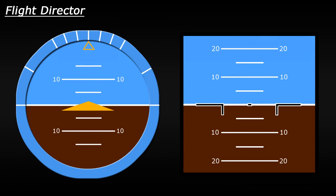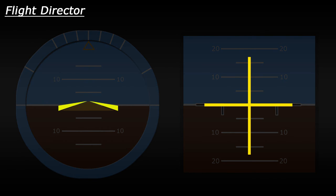The easiest way to explain this is by demonstrating how it works, but first let's look at a couple of types of Flight Director you may see. These are the two most common versions of the Flight Director in FSX. The first one is an upside down V shape, typically used on attitude indicators where the plane is represented as a triangle shape. The other is a crosshair style with a vertical and horizontal line, typically found on larger jet aircraft. Normally the Flight Director indicator is either yellow or magenta in colour.